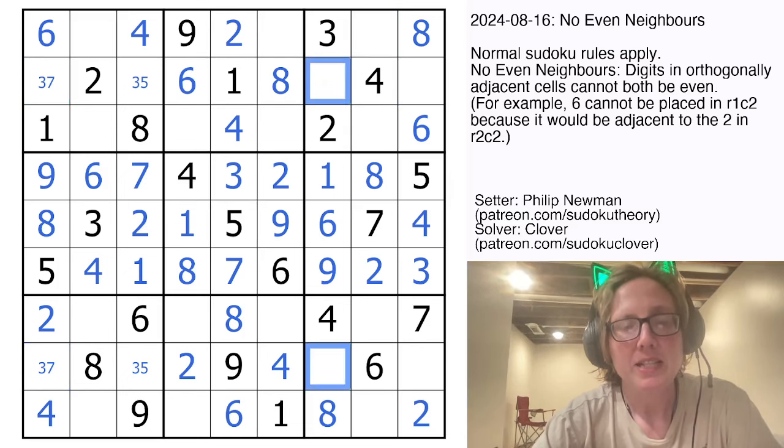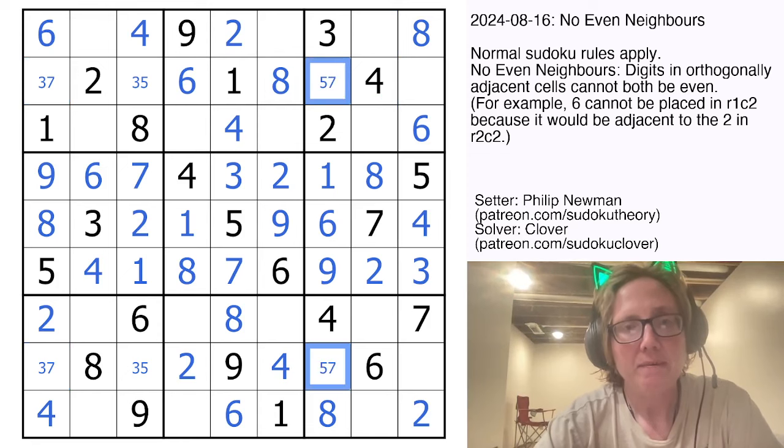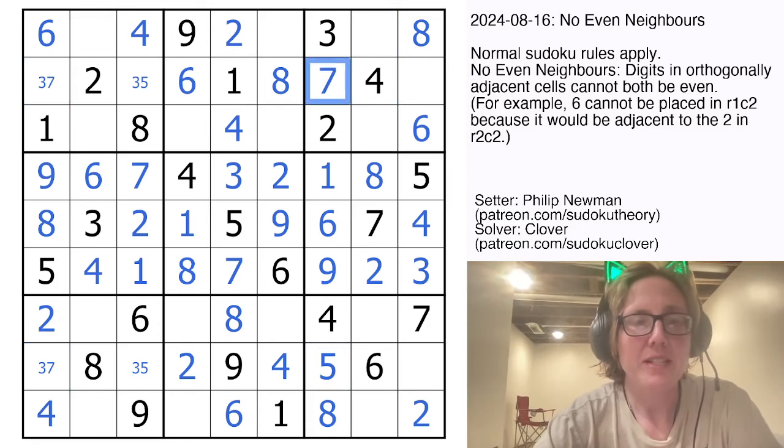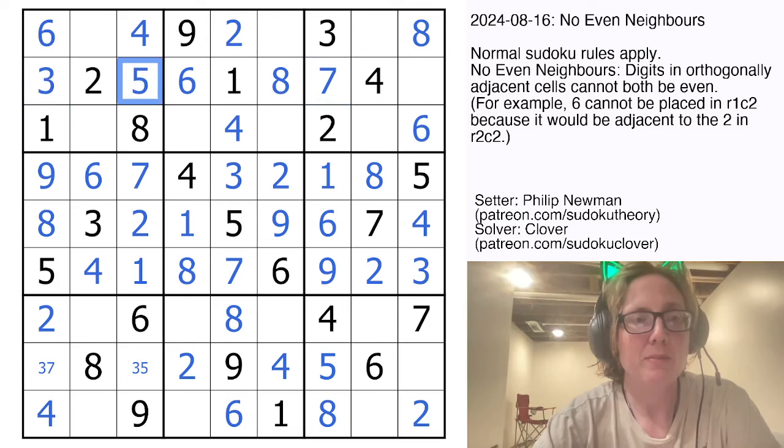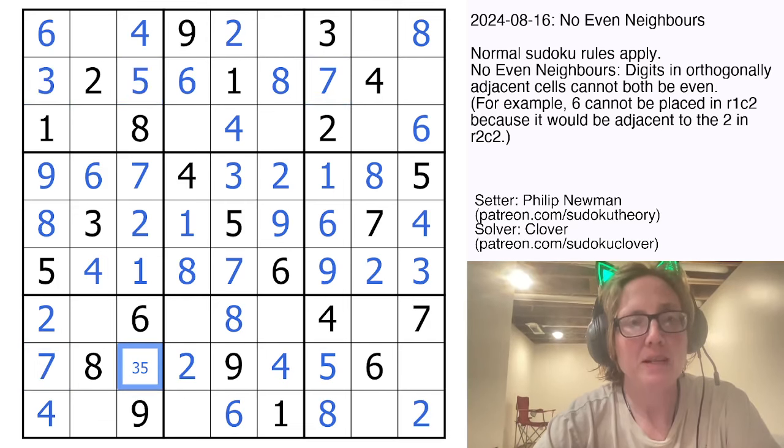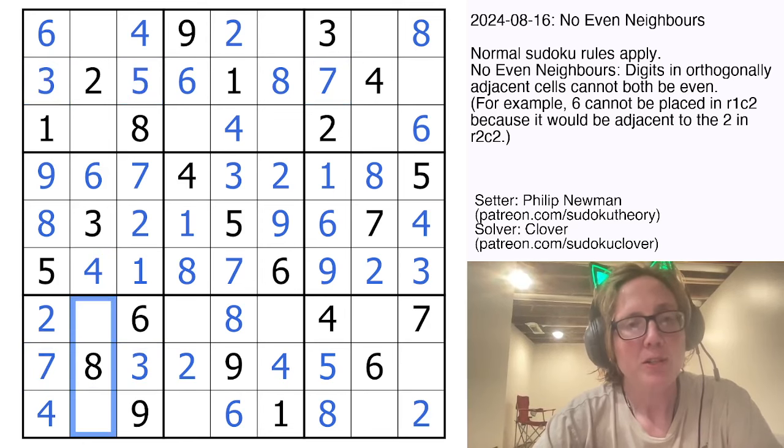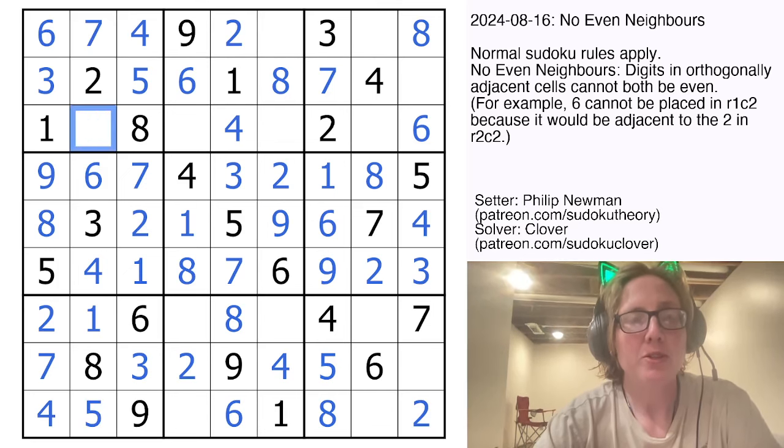Now let's look at column 7. So here we need a 5 and a 7, so that's a 5 and a 7, and that's actually going to resolve that 3, 7 pair and the 3, 5 pair at the same time. In this region we need a 1 and a 5, which are resolved, and in this region we still need a 7 and a 9, which are also resolved. We're just finishing up with our odd digits here.